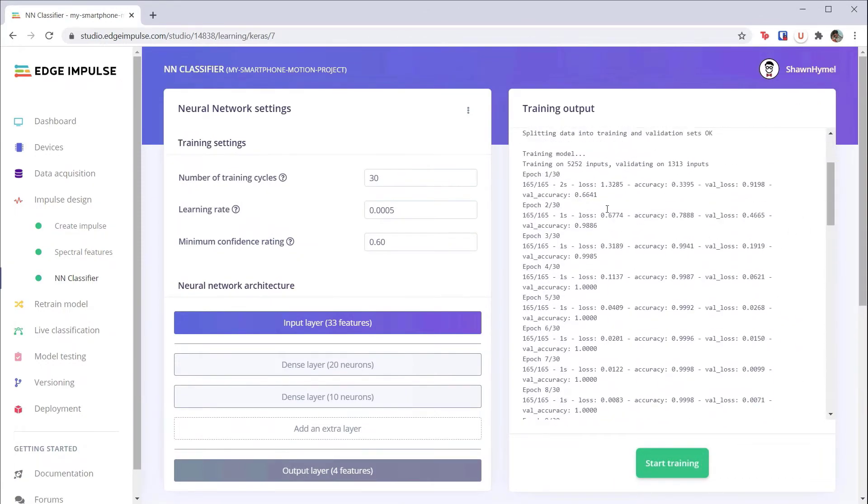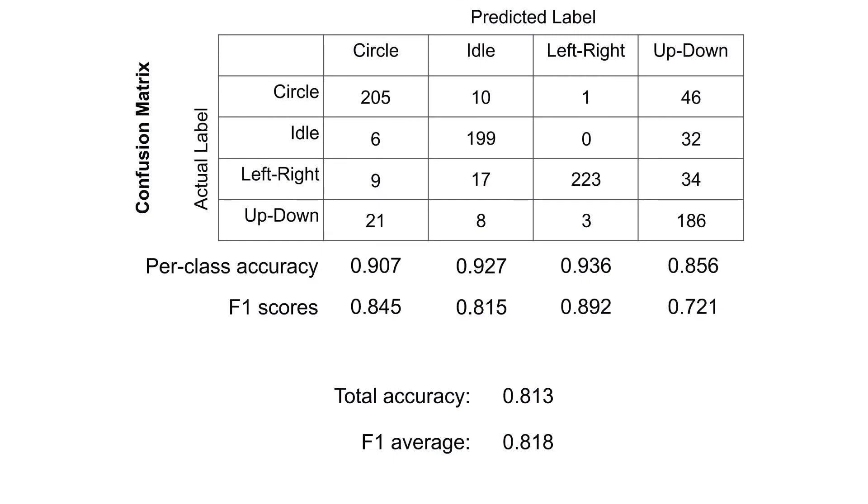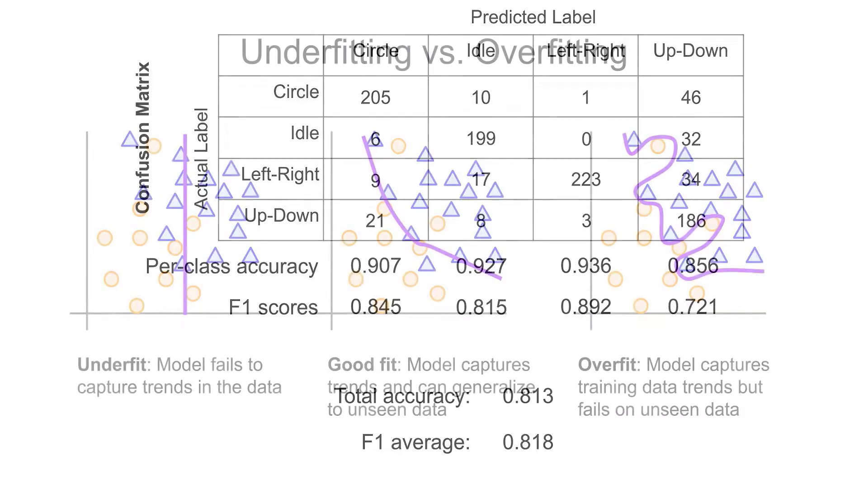After that, we examined how the confusion matrix can be used to evaluate a model's performance. We calculated several key performance metrics using the confusion matrix, including accuracy, specificity, precision, and recall. Those metrics allowed us to compute the F1 score, which is often a better way to evaluate a model over strict accuracy.